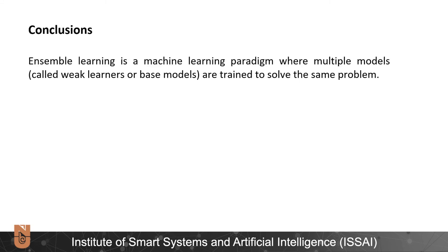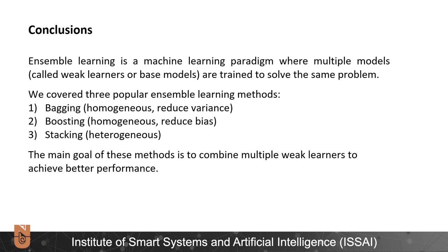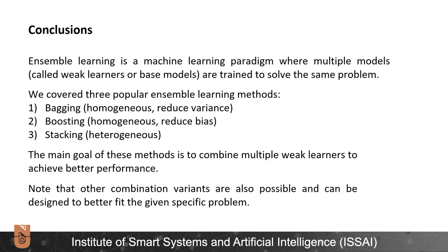Now, let's conclude our lecture. Ensemble learning is a machine learning paradigm where multiple models are trained to solve the same problem. We covered three proper ensemble learning methods: bagging, boosting, and stacking. The main goal of these methods is to combine multiple weak learners to achieve better performance than its components. Note that other combination variants are also possible and can be designed to better fit a given specific problem.